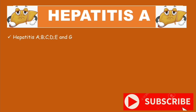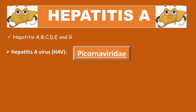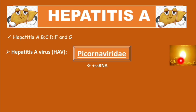These viruses are unrelated taxonomically. The Hepatitis A virus, or HAV, belongs to the Picornaviridae family. This means it is a positive-sense single-stranded RNA virus. In this series, positive-sense single-stranded RNA viruses are represented using a sun symbol. It has icosahedral symmetry.